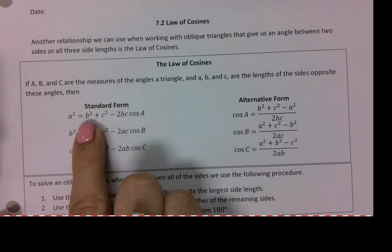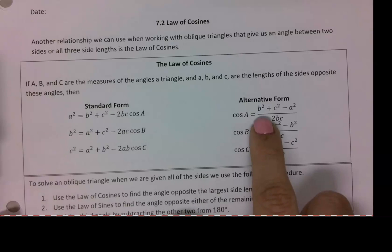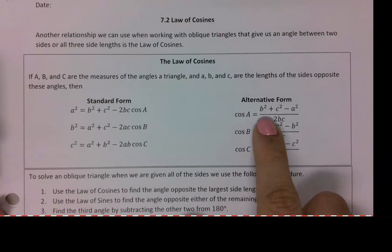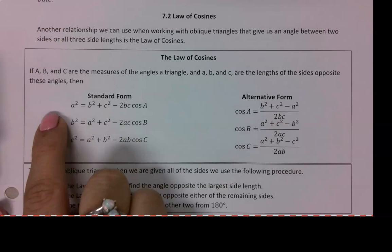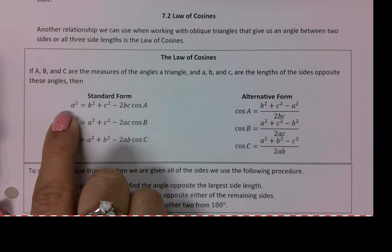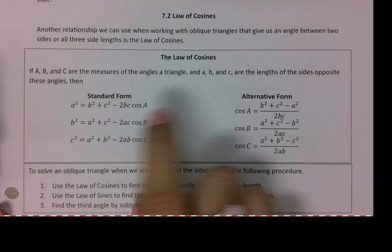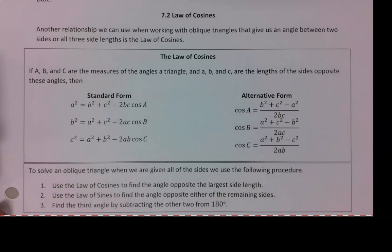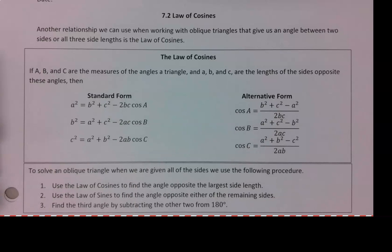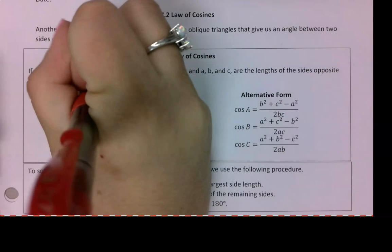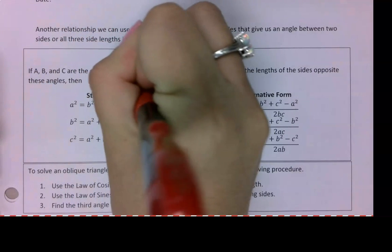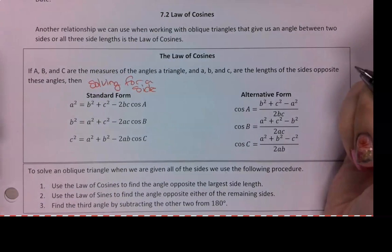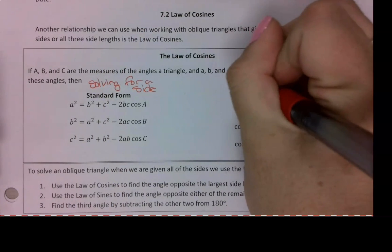I have my standard form, which is listed this way, and my alternative form, which is just rewriting the standard form. So we rearrange it so cosine is on the left, and over here, a squared is on the left. Remember, little letters, lowercase letters, are side lengths, capital letters are angles. So the standard form is useful for solving for a side, and the alternative form is useful for solving for an angle first.